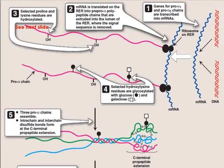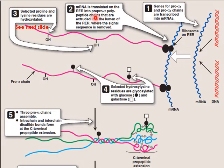Now we'll see a detailed explanation of the steps in collagen synthesis. First, genes carrying information for making pro-alpha-1 and pro-alpha-2 chains of collagen are transcribed into messenger RNA from DNA. This mRNA goes to the rough endoplasmic reticulum where it is translated into pre-pro-alpha polypeptide chains, which contain a signal sequence — a sequence of amino acids attached at the N-terminus of the polypeptide chain.